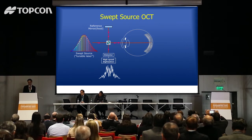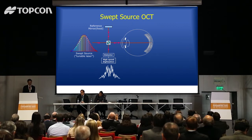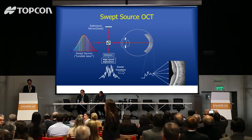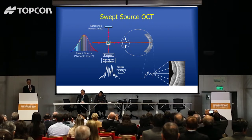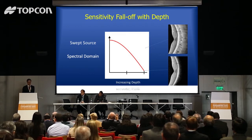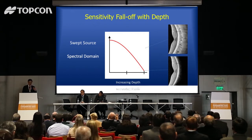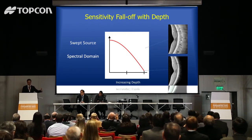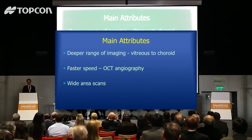With spectral domain OCT there was a fall-off in sensitivity so that deeper structures weren't seen well. With swept source, there's almost no fall-off. So we get a much better image through the full depth of the eye — we can see from the vitreous to the choroid without selecting any one of those things. We get them all at once. The OCT also works at a much higher speed because we don't need to wait for a line CCD to charge up.